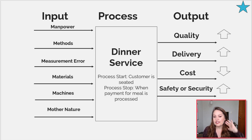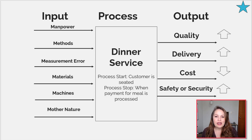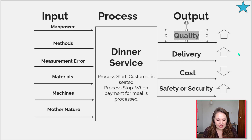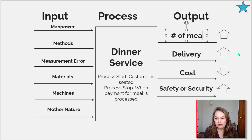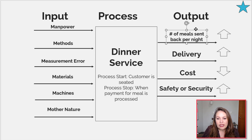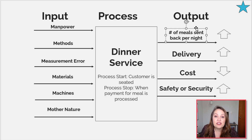So in this example, dinner service is going to start when our customer is seated and end when the payment for the meal is processed. Using the QDCS framework — Quality, Delivery, Cost, or Safety — that helps us as the facilitator have some ideas of questions to ask. For quality: what tells us it's a quality dinner service? Maybe that's the number of meals sent back per night. By normalizing this, we can immediately start to see how we're going to capture and graph that data.